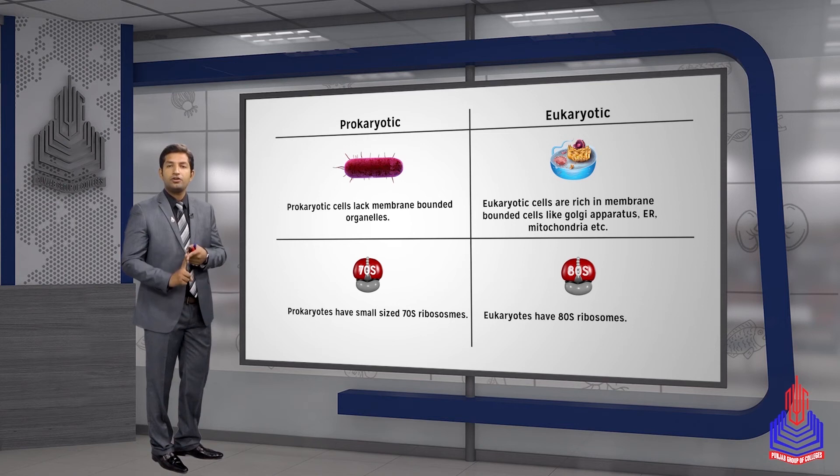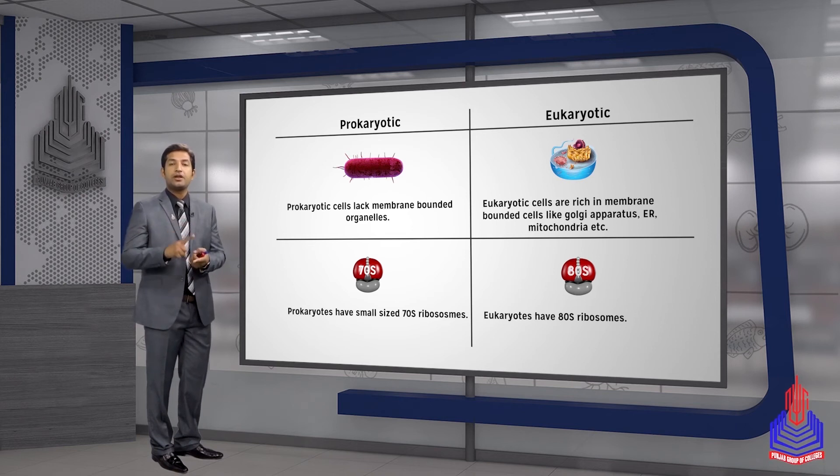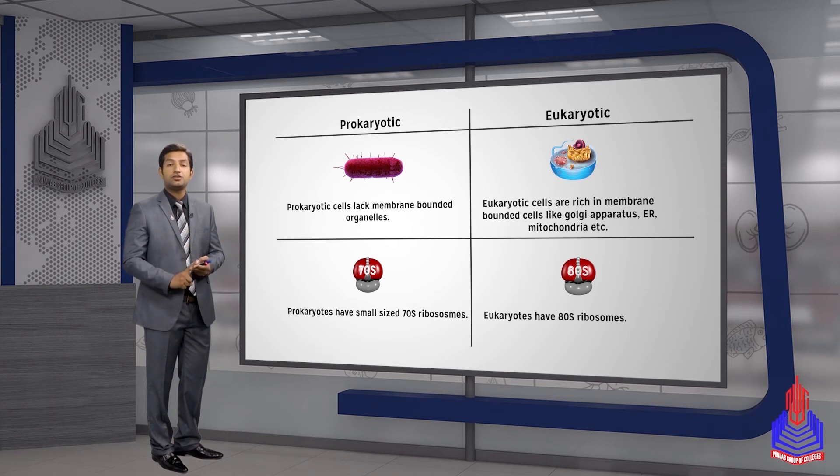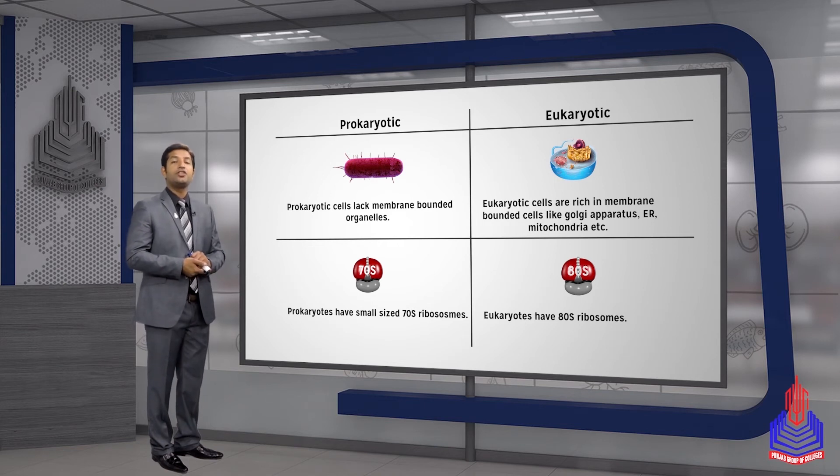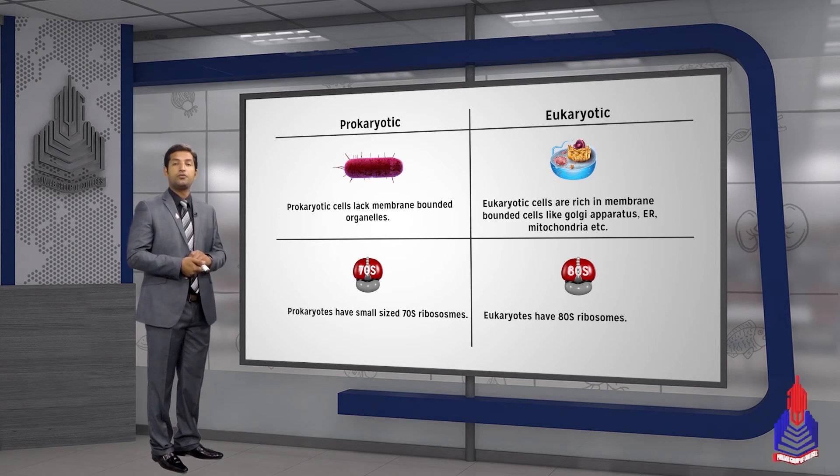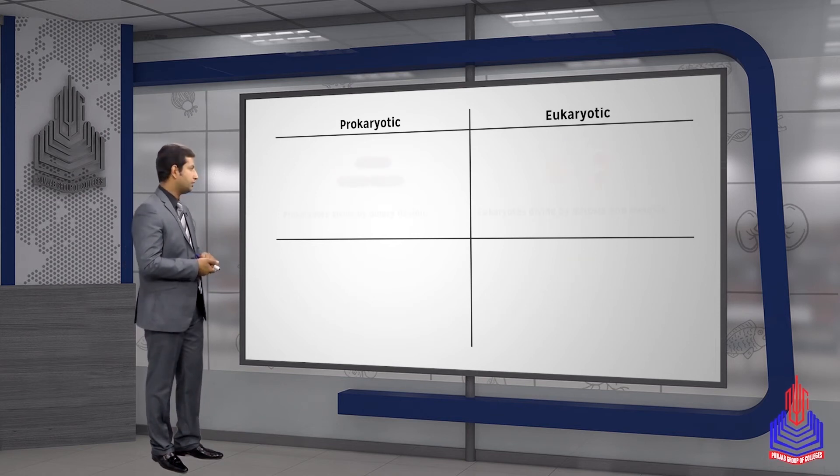Prokaryotic ribosomes are 70S ribosomes. If we differentiate them into subunits, they contain the smaller subunit that is 30S and the larger subunit that is 50S, but as a whole it is 70 Svedberg unit ribosome. On the other side, eukaryotic ribosomes are 80S ribosomes with smaller subunit 40S and larger subunit 60S Svedberg.